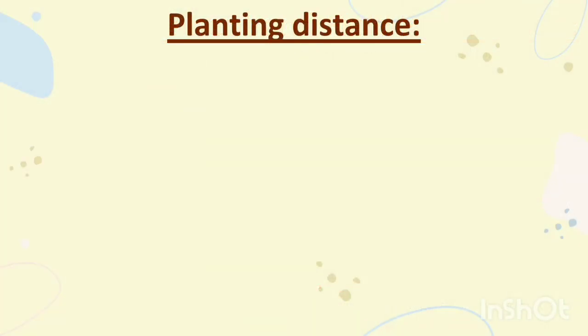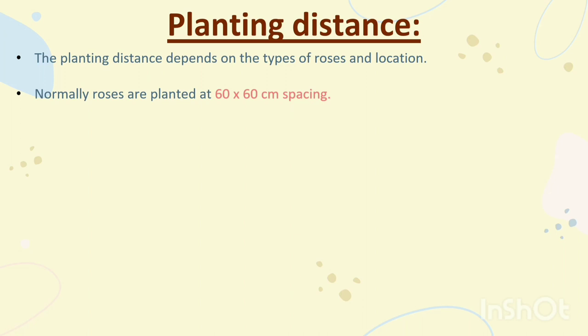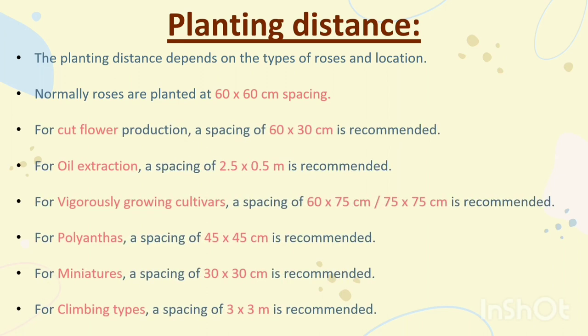Planting Distance. The planting distance depends on the type of roses and location. Normally roses are planted at 60 × 60 cm spacing. For cut flower production, a spacing of 60 × 30 cm is recommended. For oil extraction, a spacing of 2.5 × 0.5 m is recommended. For vigorously growing cultivars, a spacing of 60 × 75 cm or 75 × 75 cm is recommended. For polyanthas, a spacing of 45 × 45 cm is recommended. For miniatures, a spacing of 30 × 30 cm is recommended. For climbing types, a spacing of 3 × 3 m is recommended.